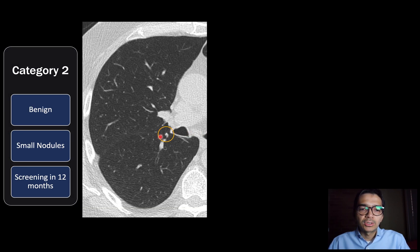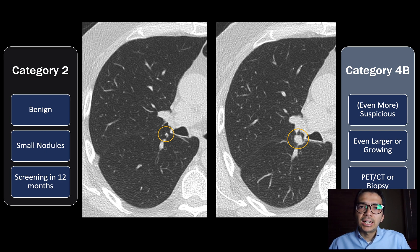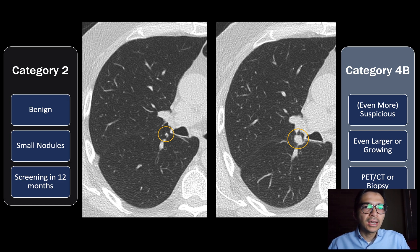Here's an example: you come in for your first lung cancer screening CT and we see a small lung nodule about four millimeters in size. We call this a Category 2 and ask you to come back in 12 months. On follow-up one year later, this lesion grew, so now we call it Category 4B — suspicious for lung cancer — and we recommend a PET CT or biopsy. This brings up an important point: lung cancer screening is not a single test that you're done with for life. It's a yearly process, because we need to detect growth to differentiate cancer from a benign lesion.